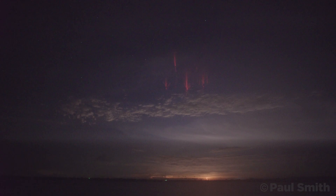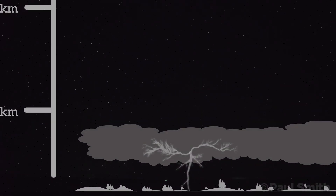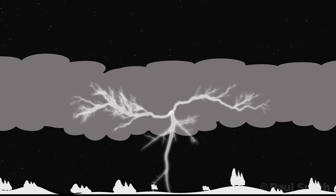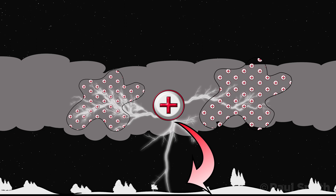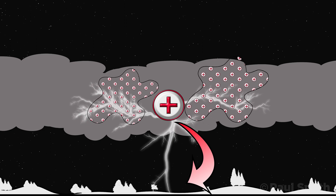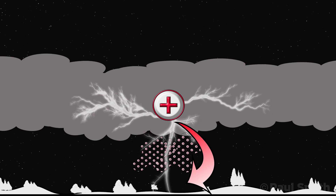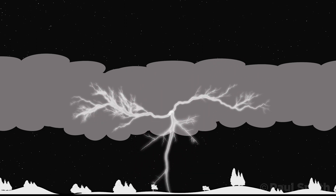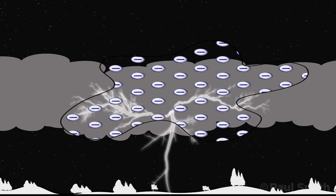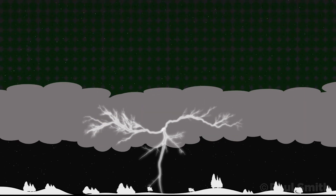These big positive strikes involve a huge draw of positive charge from the local clouds, which gets discharged into the ground below, and then what can be left in and around the cloud is this really strong negative charge layer.